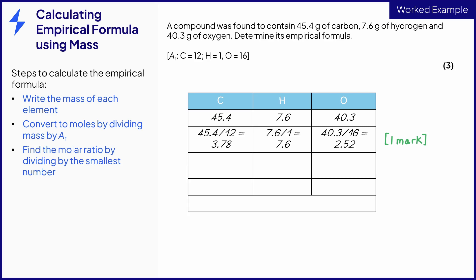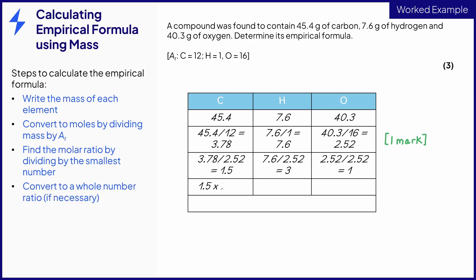Now you need to find the molar ratio by dividing the number of moles of each element by the smallest number of moles — in this case 2.52. The molar ratio found is not a whole number ratio, so we need to multiply everything by two to convert it to a whole number ratio. Note that this step is only required if you don't find a whole number ratio straight away. You would be awarded one mark for either of these ratios.